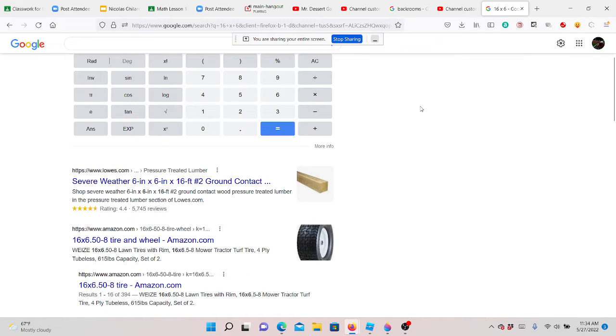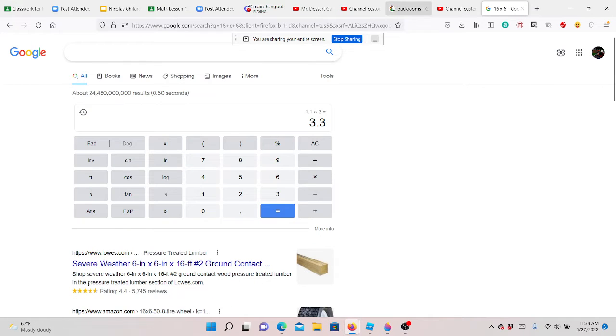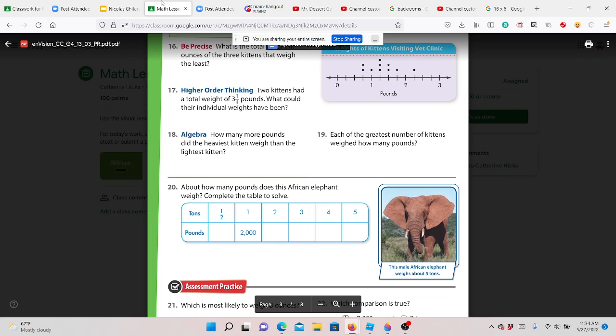Math sucks. One point one times three equals 3.3. That's the easiest thing. What do you mean? No, math sucks, but it's easy. Bro, did you take a shit and then slam your head on the toilet? Did you take a shit in a nuclear barrel?